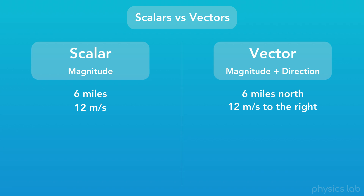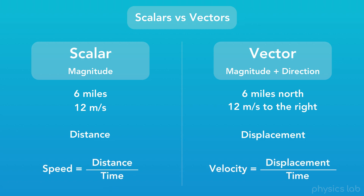We've mentioned the words distance and displacement. The difference between them is that distance is a scalar, and displacement is a vector. And it turns out, this is the difference between speed and velocity.